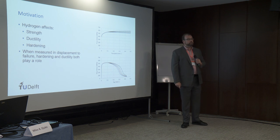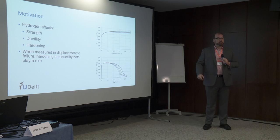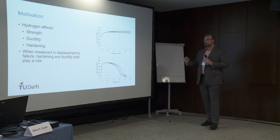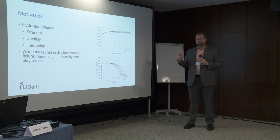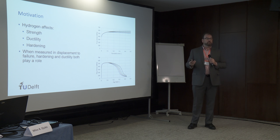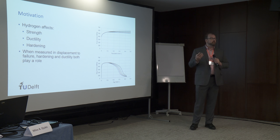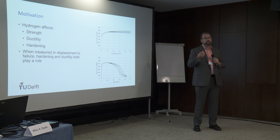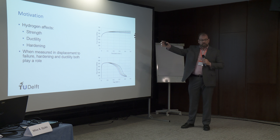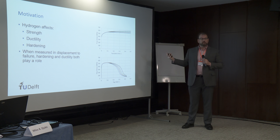We know that hydrogen affects the strength of materials, it affects the ductility, and it can soften the material. From the engineering perspective, when we zoom out to the continuum perspective, we know that all of these things interact. For example, softening can induce localization, which can in turn induce a reduced engineering failure strain. So there's a coupling between all of these things that hydrogen affects and the end engineering failure strain we might experience on a structural level.